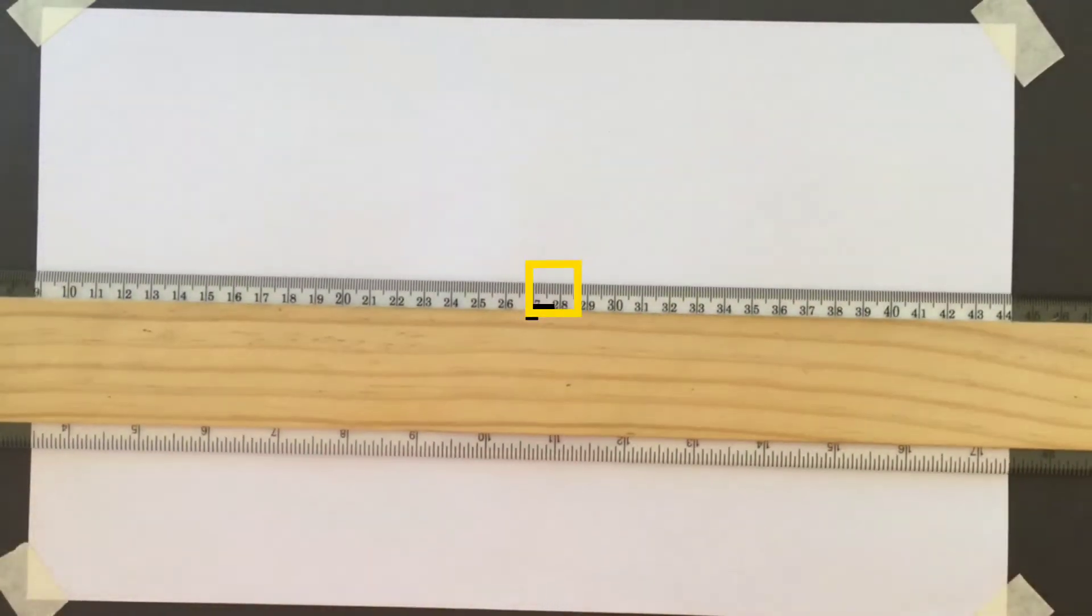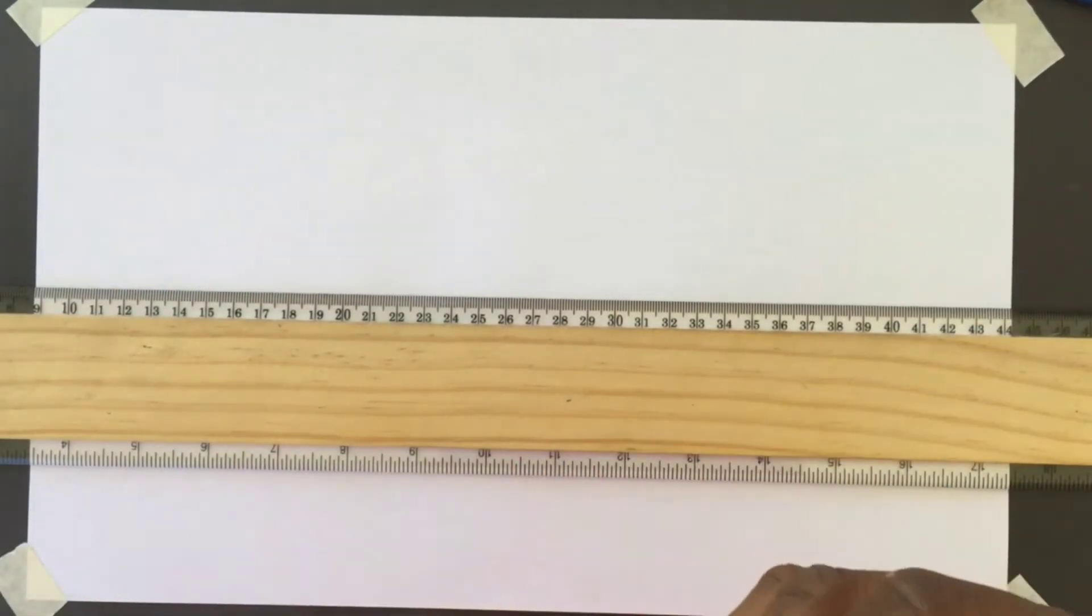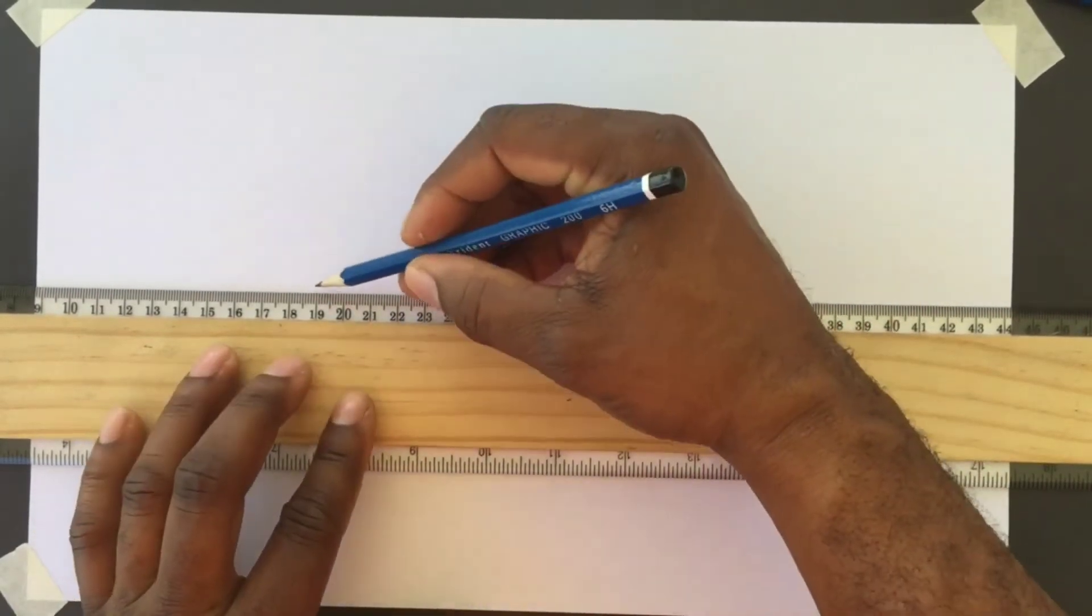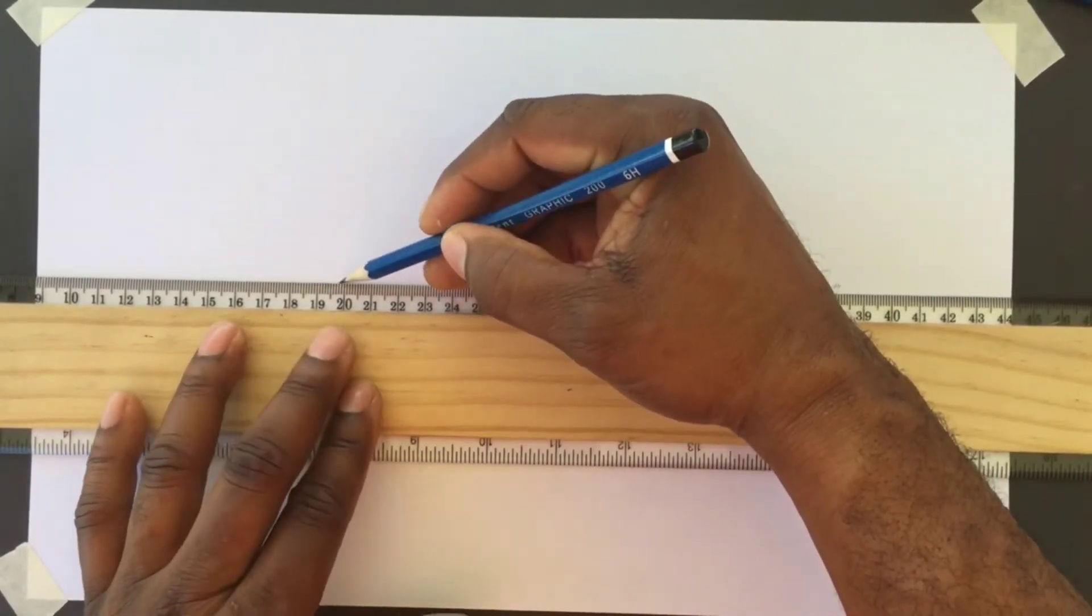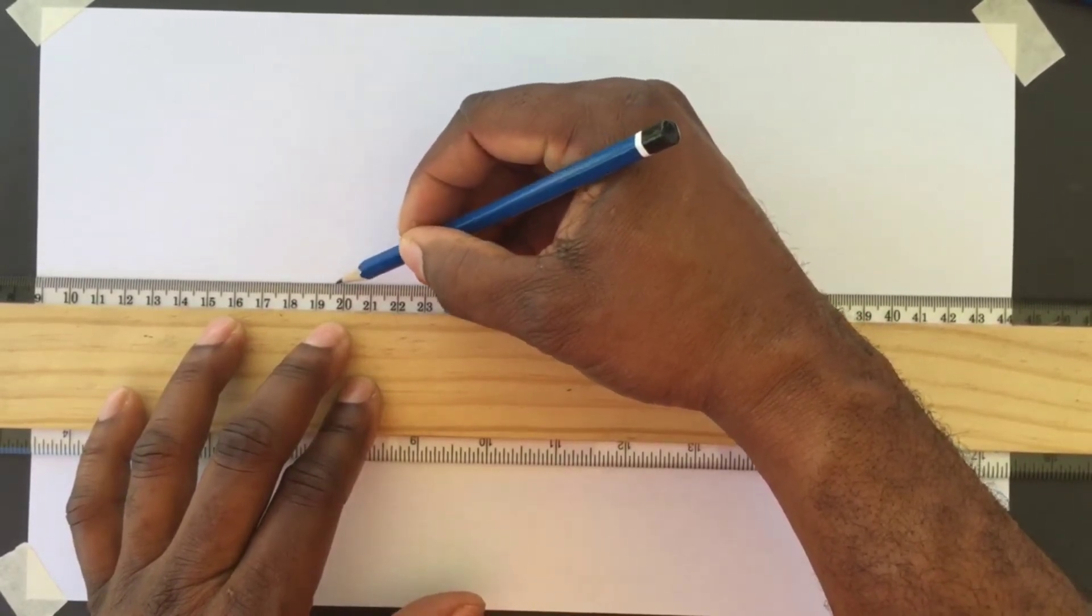We will first draw intersecting perpendicular center lines. The horizontal center line will be drawn first. A center line consists of long and short dash.